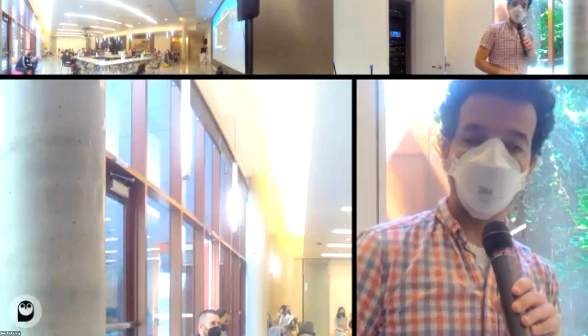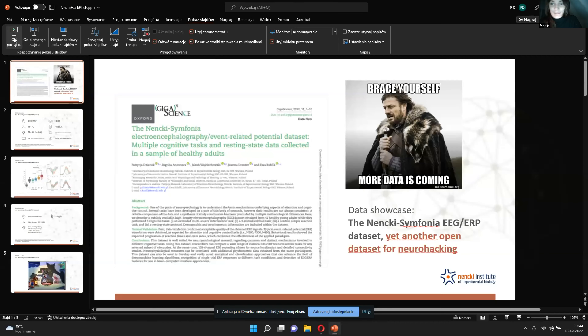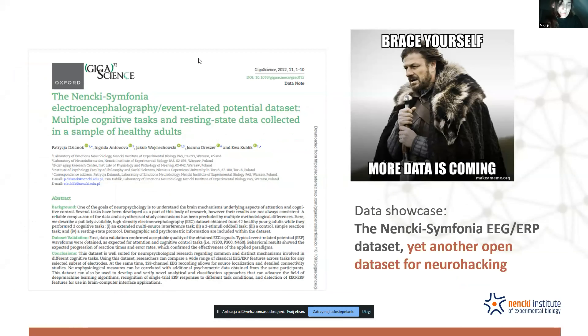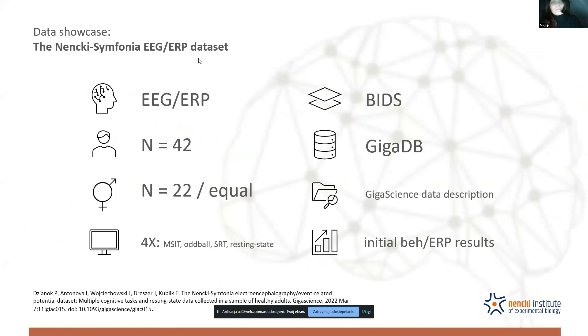Hi, I'm Patricia. I'd like to advertise a dataset released last year by the team I work with. The dataset is called the Danensky Symfonia EEG ERP dataset. Last Monday we heard it's good to have huge neuroimaging datasets of 1,000 participants or more — so this is not the case here. We have a smaller dataset with 42 participants.